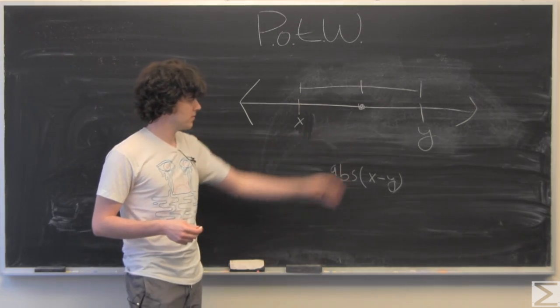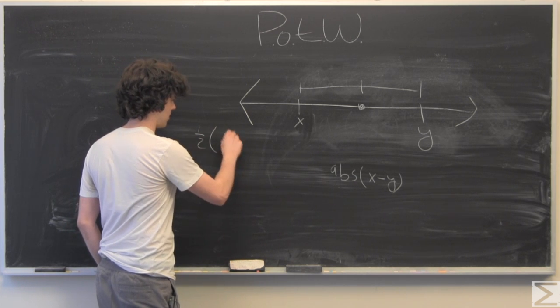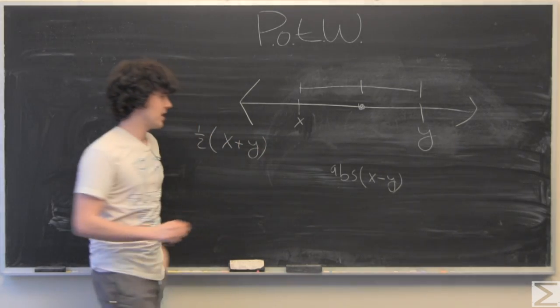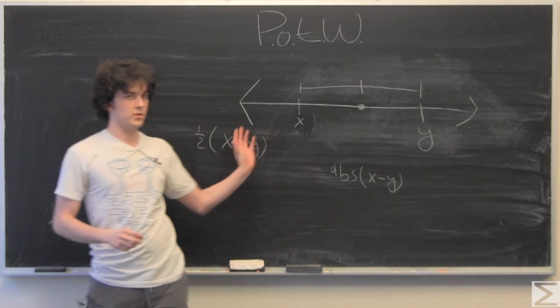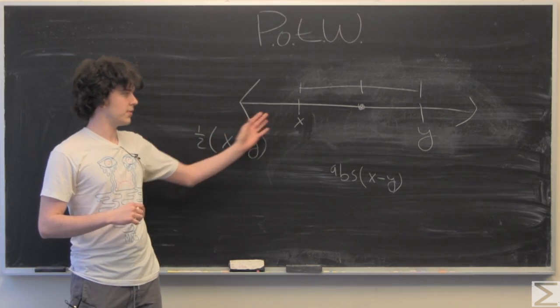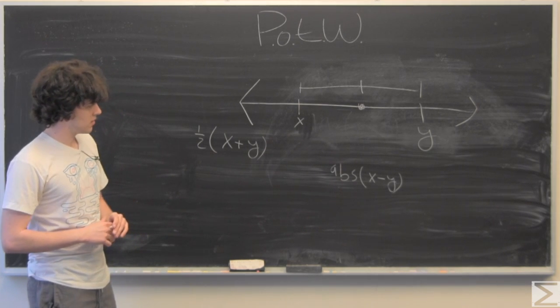The midpoint between the two is going to be one half of x plus y, and this works on any part of the number line, if you're positive, negative, or a mix of positive and negative numbers.